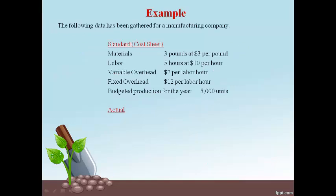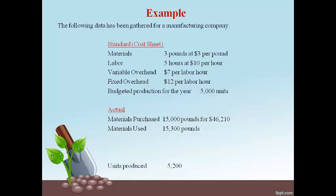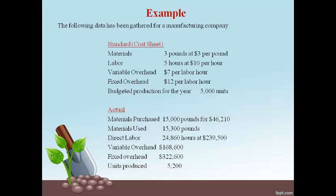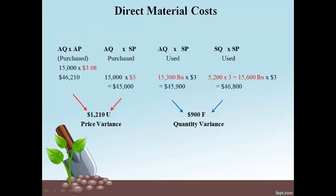Let's walk through an example with numbers. The information labeled as standard are the estimated cost and quantities stated on the cost sheet. The actual materials information and units produced come from the inventory report. The direct labor information is from the payroll reports, and the overhead dollar amounts are from the general ledger. Let's now use this information to perform variance analysis to explain what caused the difference in the actual and estimated cost of material.